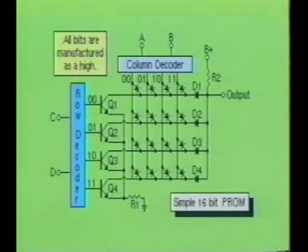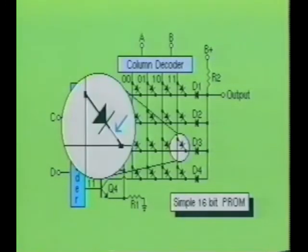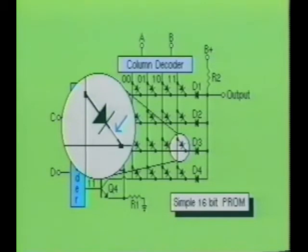The memory configuration of a programmable read-only memory device is very similar to its counterpart, the ROM. The primary differences are that each bit contained within a PROM device is manufactured to represent a high output. During construction of the PROM device, each connecting diode contained within the memory array will have a thinner layer of conducting material attached to it. This thin layer acts as a fuse link, which will open to produce a low state when the device is programmed.